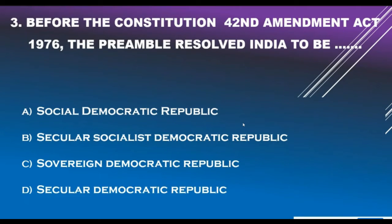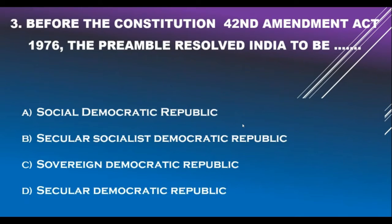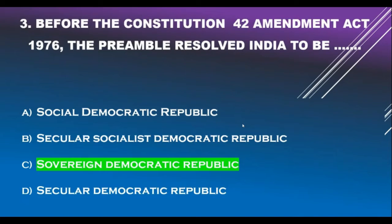Question number 3. Before the Constitution 42nd Amendment Act 1976, the Preamble resolved India to be: Option A - Social Democratic Republic. Option B - Secular Socialist Democratic Republic. Option C - Sovereign Democratic Republic. Option D - Secular Democratic Republic. Correct answer is Option C: Sovereign Democratic Republic.